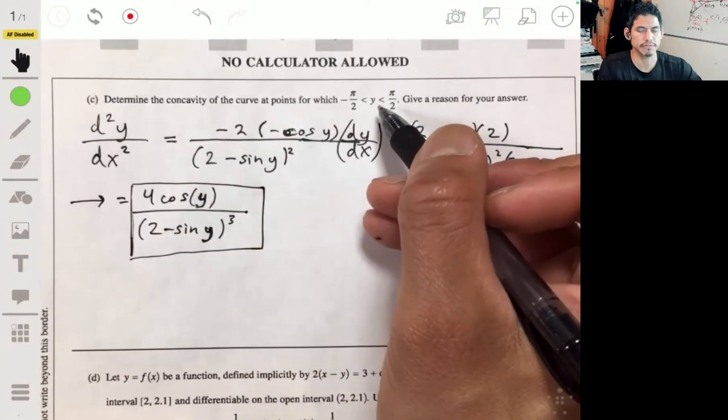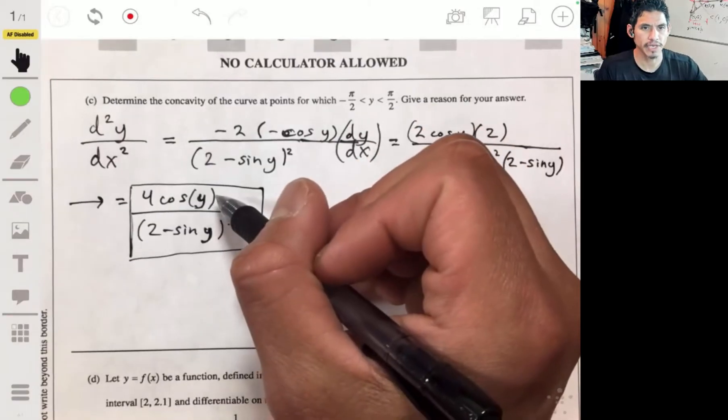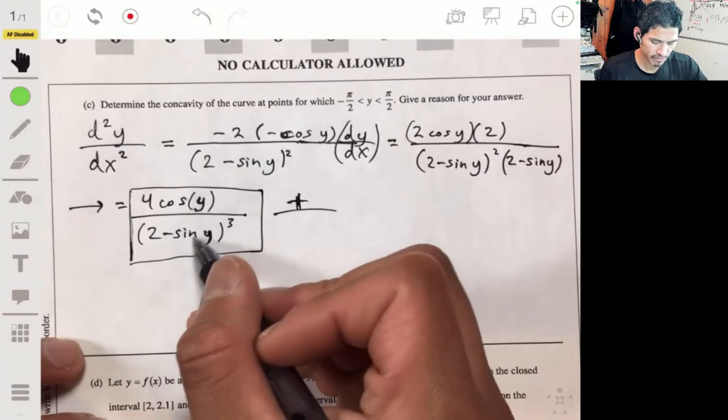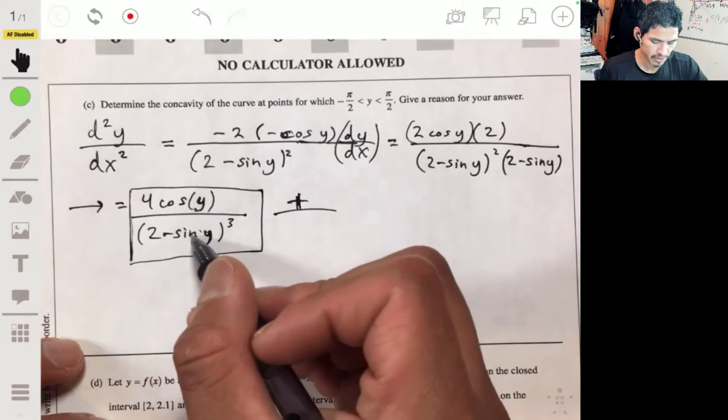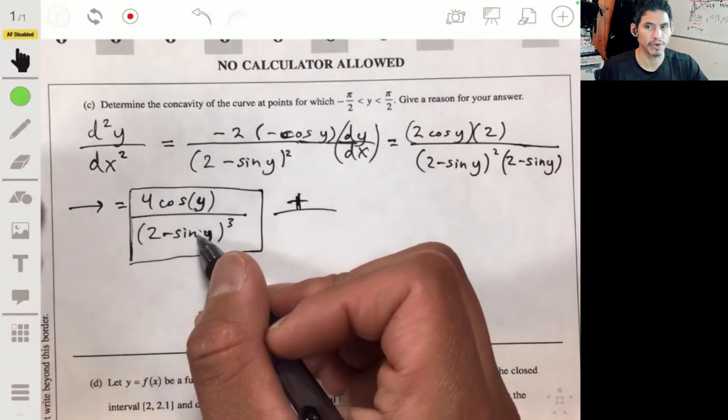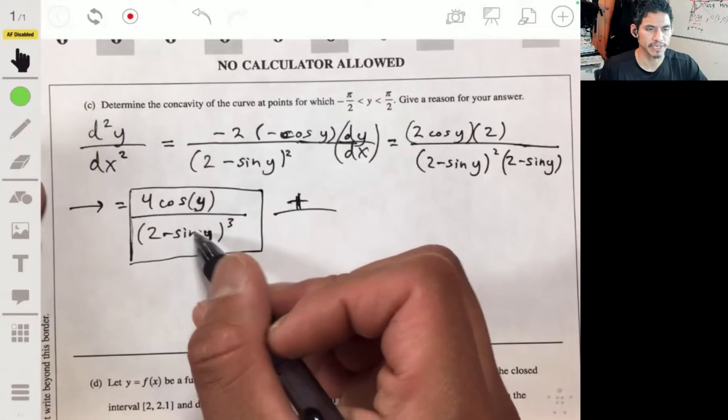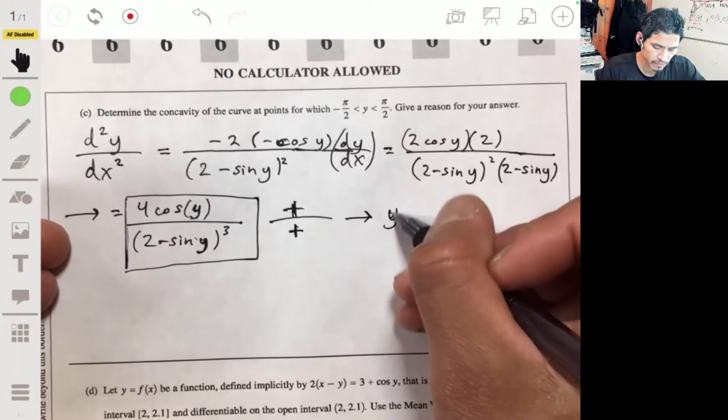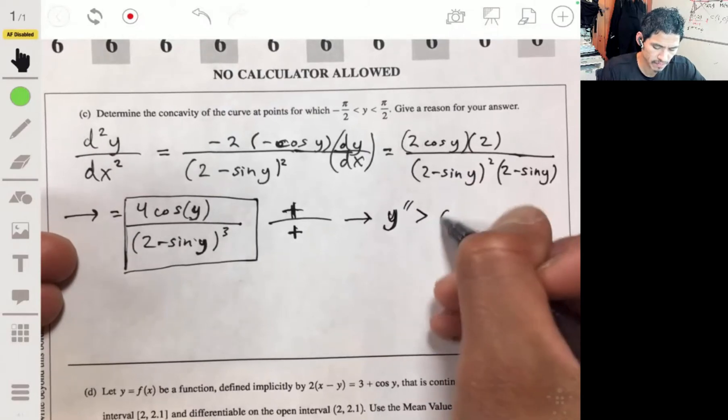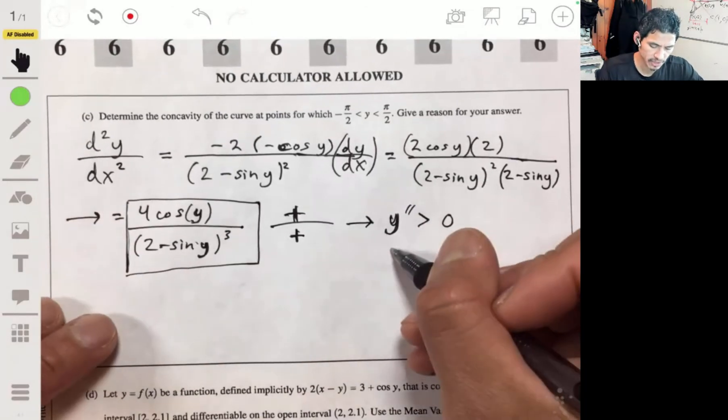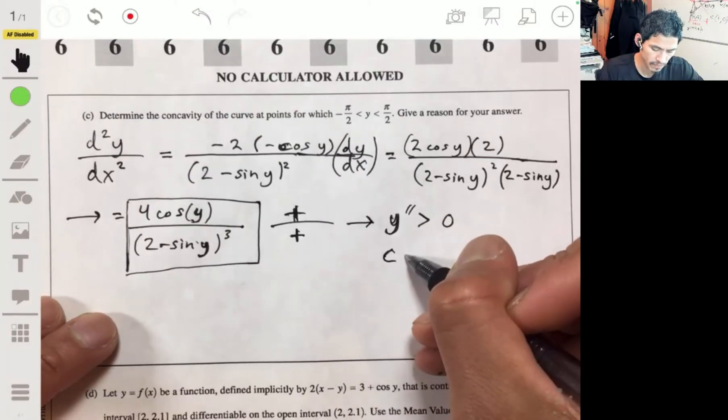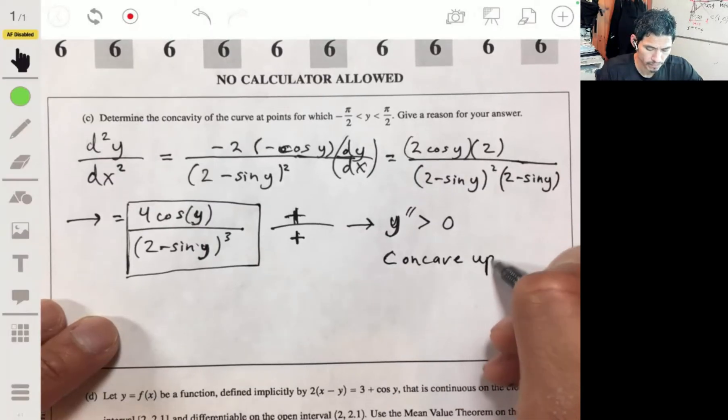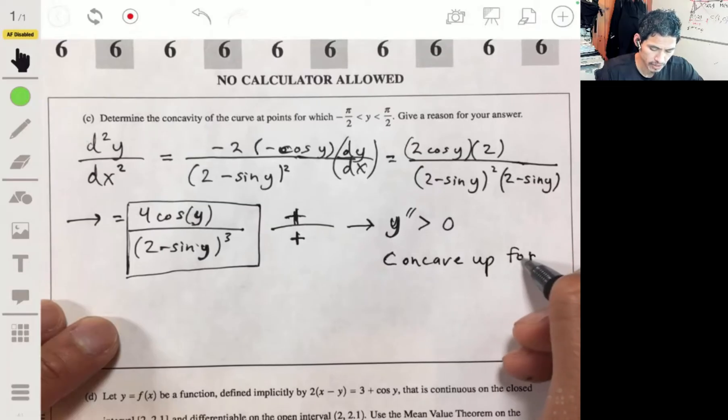Now, since we're restricted to this interval, that means the cosine will always be positive. So we're going to have a positive number over, and since the sine can never be more than one, two minus any number, whether it's one or negative one even, it's going to be positive. Positive cubed is still positive. Doesn't matter. And in either case, the second derivative is going to be positive. And then that means it's going to be concave up.